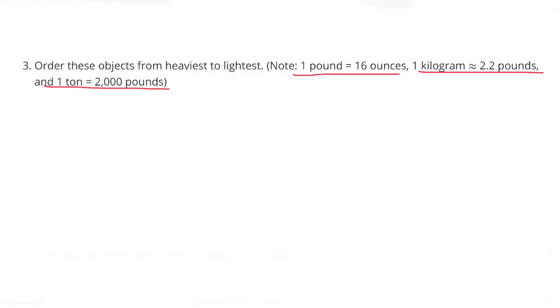Number 3. Order these objects from heaviest to lightest. Note, 1 pound equals 16 ounces, 1 kilogram equals 2.2 pounds, and 1 ton equals 2,000 pounds.